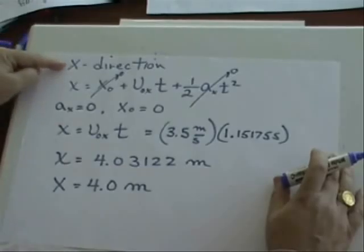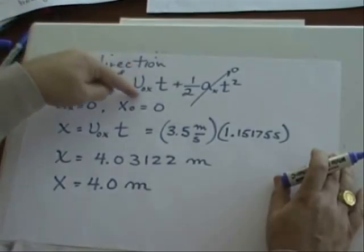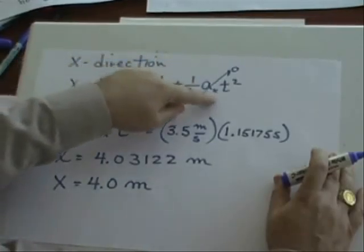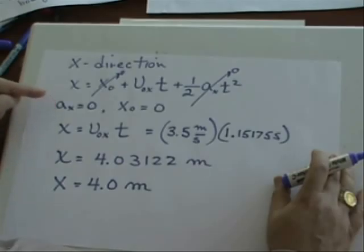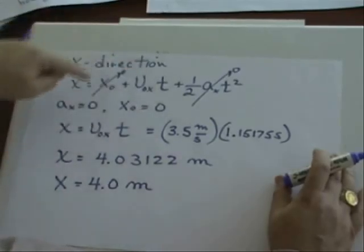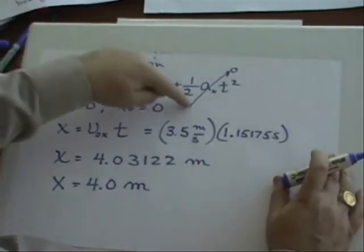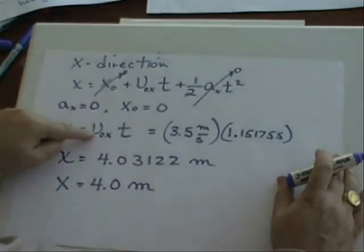If we look at the x direction, we'll have x equals x naught plus v naught x t plus 1 half a x t squared. Here, a x is always equal to 0 in horizontal flights in projectile motion. There is no acceleration in the x direction. So it's always equal to 0. And our x naught is 0. So putting these two back in, you see this goes to 0, this goes to 0. Our x now is just v naught x t.